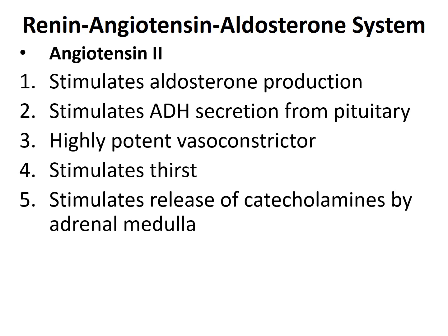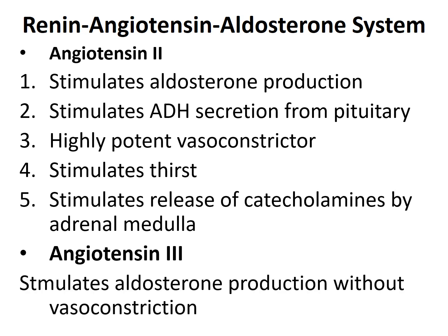Angiotensin 2 also stimulates release of catecholamines from the adrenal medulla. All these functions — aldosterone production, ADH secretion, vasoconstriction, stimulating thirst, and catecholamine release — are aimed at increasing blood pressure. Angiotensin 3 is the last component; it can to some extent stimulate aldosterone production without vasoconstriction, but its effect is mild and not very significant.